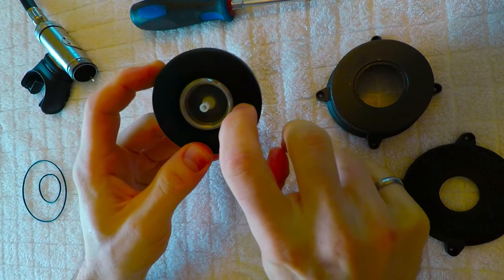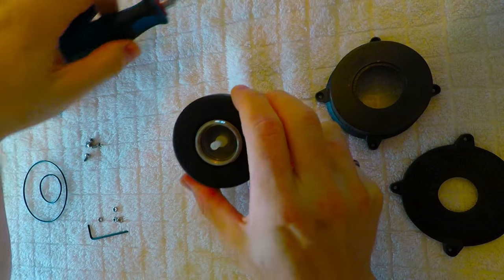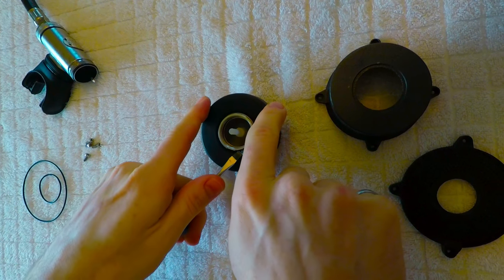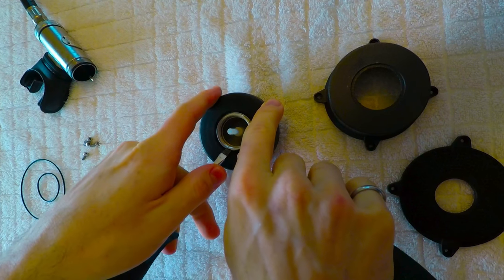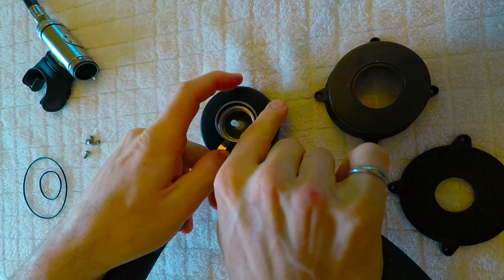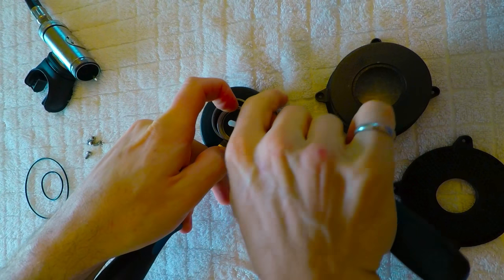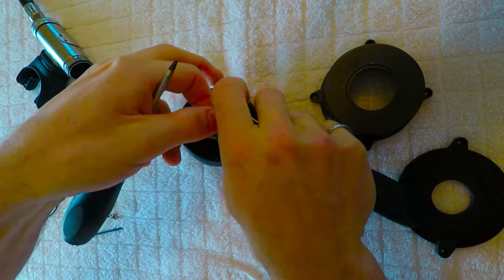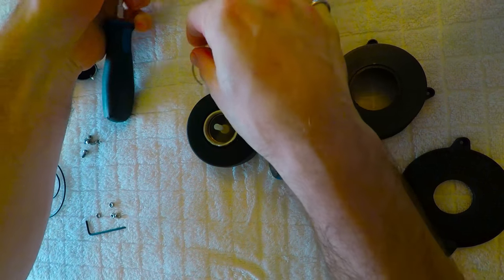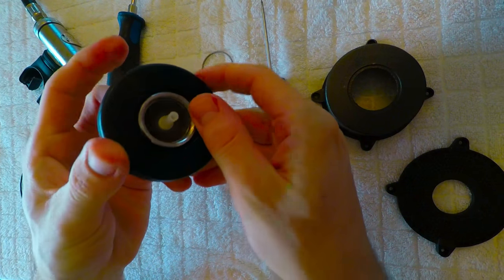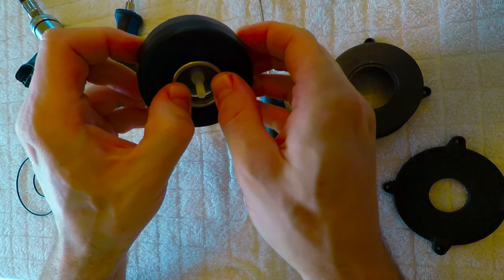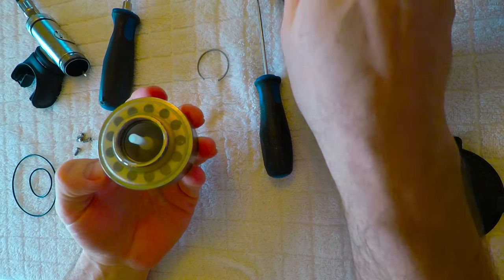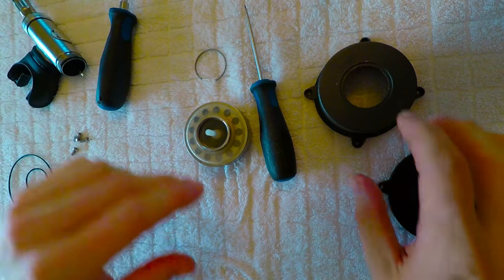The next part is to remove this little clip, that's what you need the screwdrivers for. Place it on a flat surface and gently pry the clip off. Careful not to let it spring off and run away from you because it can certainly do that. Once you've got the clip off, push the stainless steel component out of the plastic sleeve. You can set that aside for now.